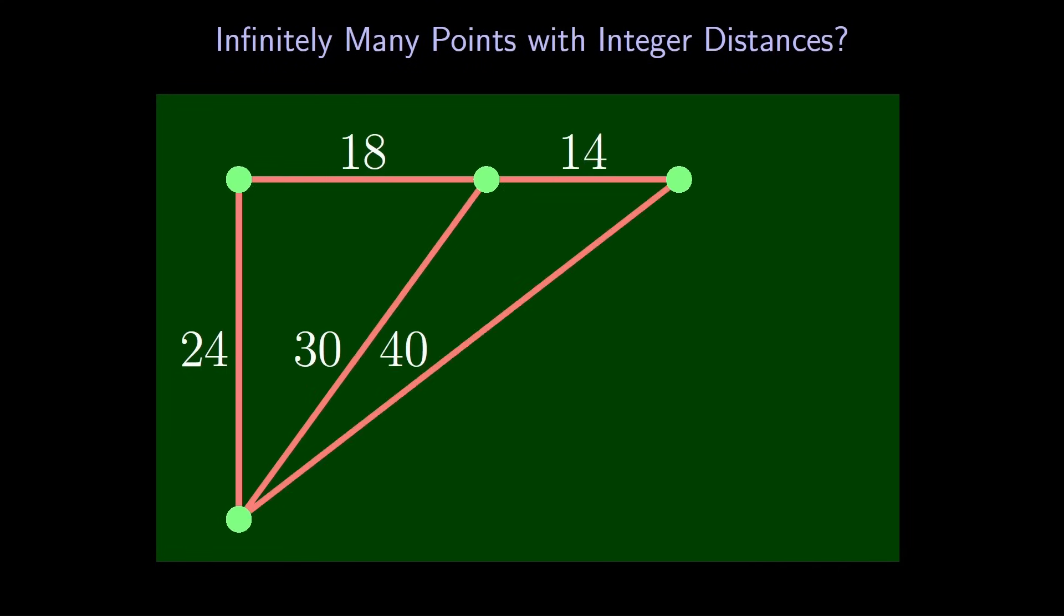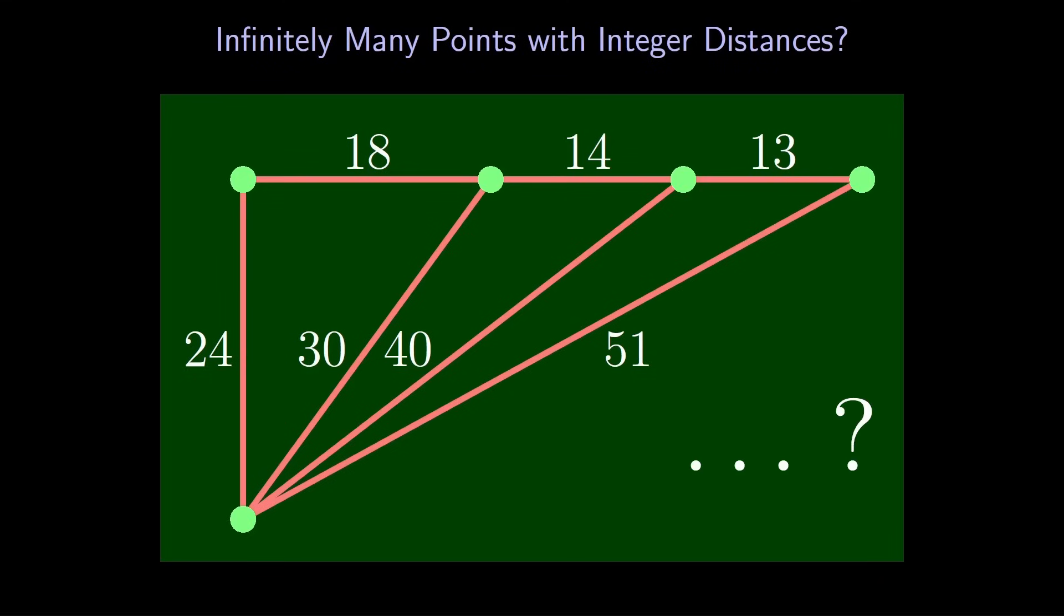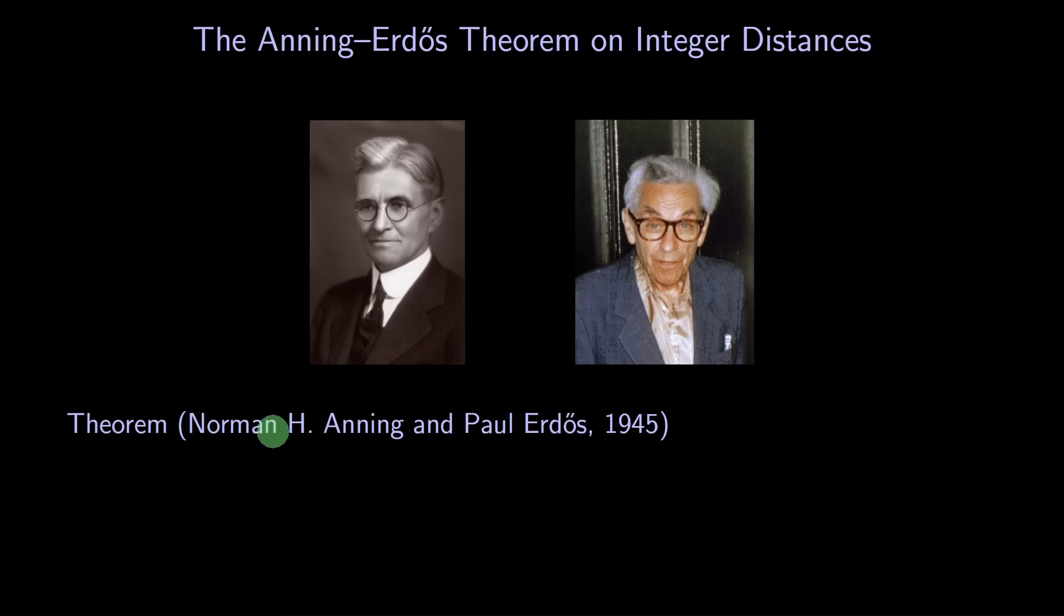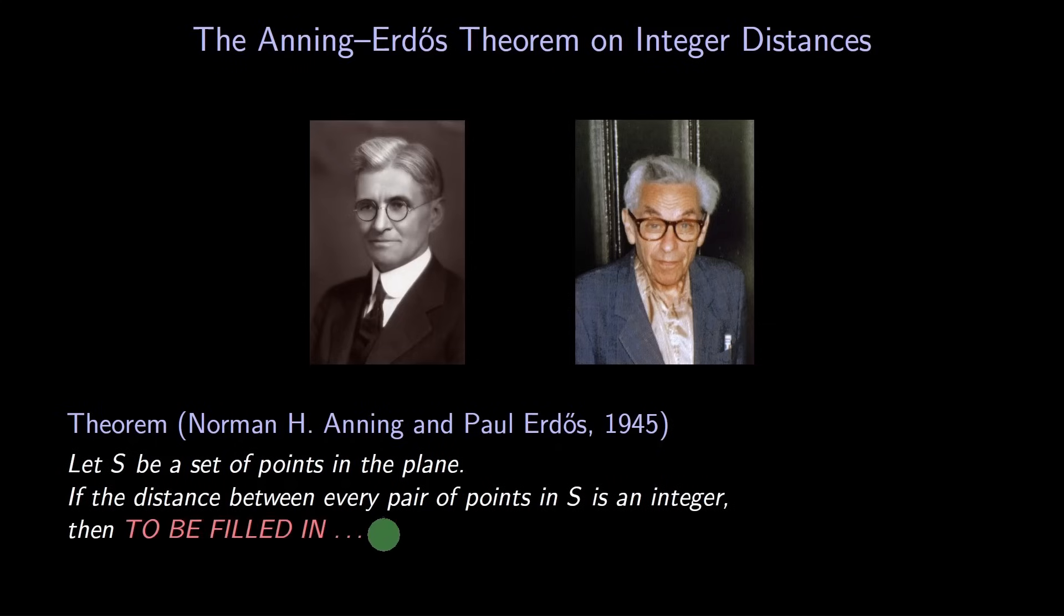Are there infinitely many points that are an integer distance apart? And if so, under what conditions? This question was answered by two mathematicians, Norman Anning and Paul Erdős. Their theorem starts like this. We'll fill in the complete statement later.